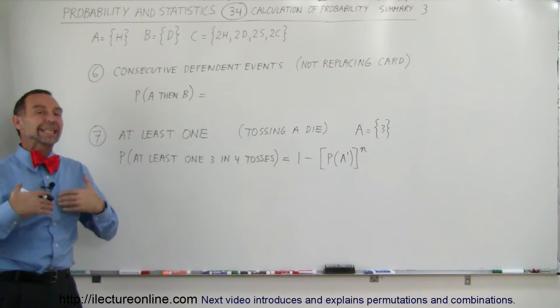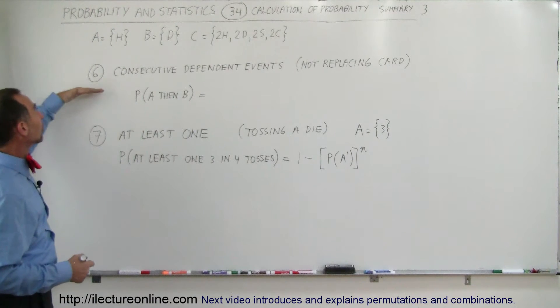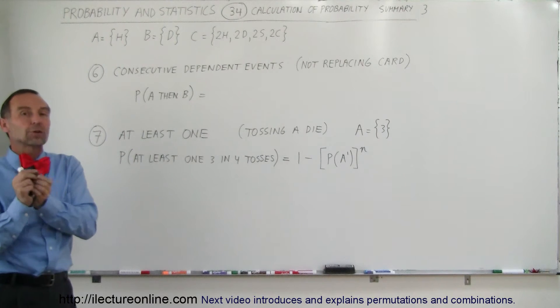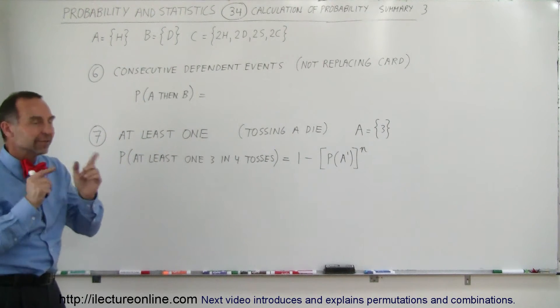Welcome to Electron Online and now we're going to look at the next two types of calculations for probabilities. Here we're looking at number six. Here we have what we call dependent events because now we're not going to replace the card. We're going to be pulling cards out of the deck, not replacing it, see what happens.